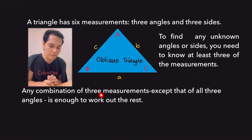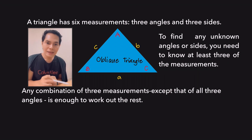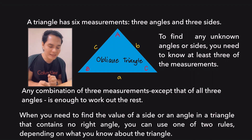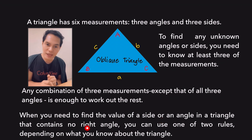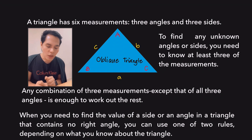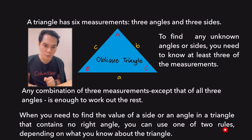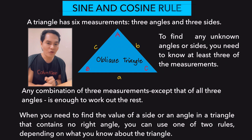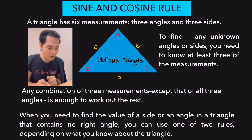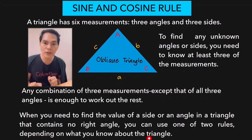Any combination of three measurements, except that of all three angles, is enough to work out the rest. And when you need to find the value of a side or an angle in a triangle that contains no right angle — an oblique triangle — you can use one of the two rules: the sine rule and the cosine rule. That depends on what you know about the triangle.